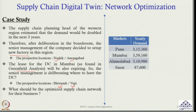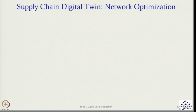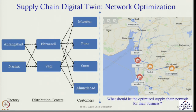This is the data of demand. I have four markets — Pune, Mumbai, Ahmedabad and Surat. Yearly demand has become doubled compared to the earlier scenario, and I also have their latitude and longitude. So I know where these markets are exactly located and I know their yearly demand as well. My objective is to find out what should be the optimised supply chain network for their business.